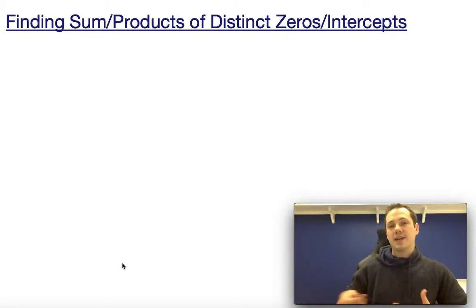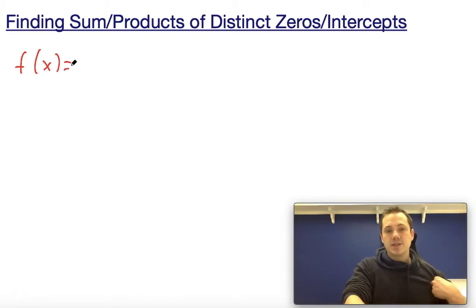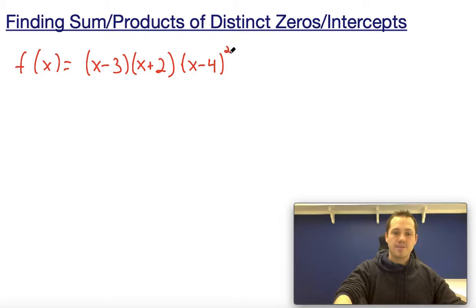So let's say we have to find the product of the distinct zeros or intercepts for the following function. Let's say our function was f(x) equals x minus 3 times x plus 2 times x minus 4 squared times x plus 7.